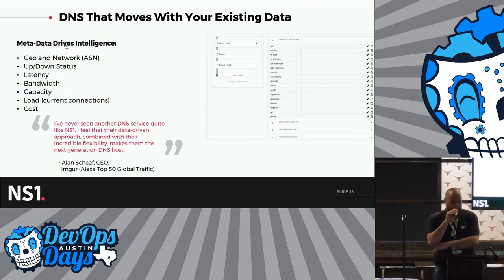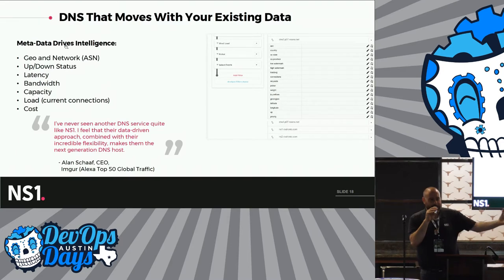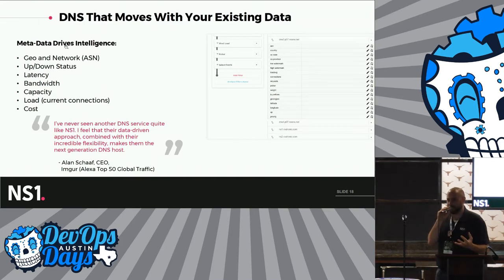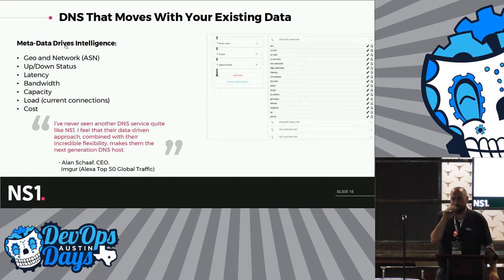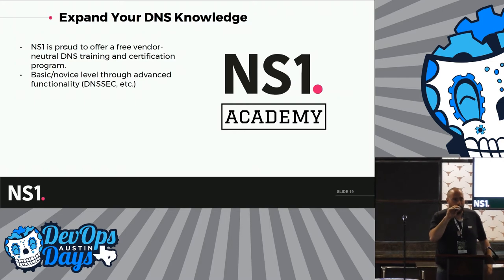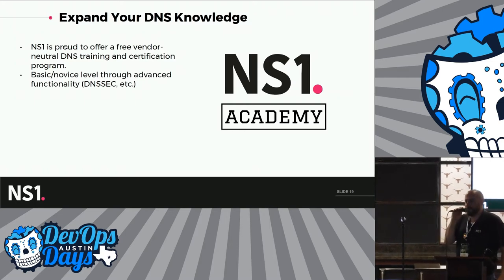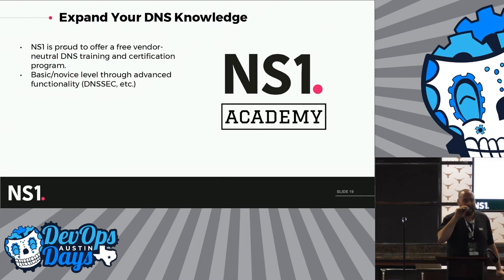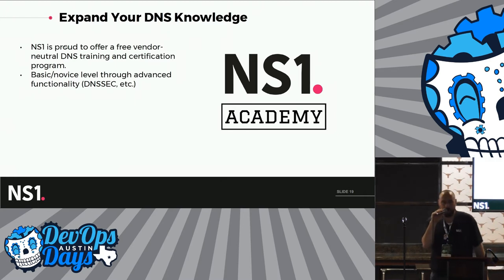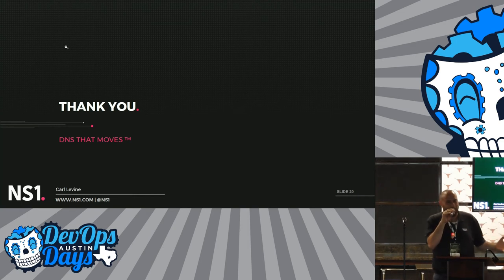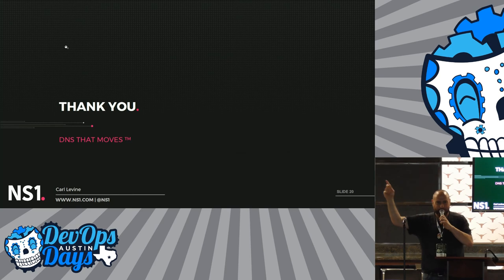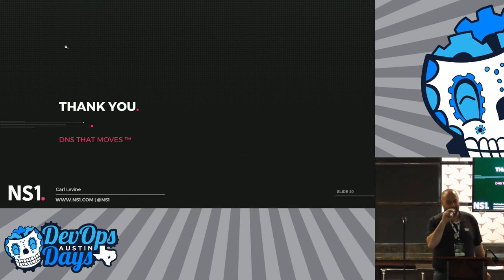Just a quick plug for us — we're up in the vendor suite at 1:30. We can take all that data in and do interesting things with it, routing based on metrics that are important to you, your business, and your customers, whether internal or external. And if you want to learn more about the domain name system, we just launched NS1 Academy on Monday, which is a vendor-neutral DNS training certification we've rolled out as a service. You can learn more about how this very important piece of the internet works. My name is Carl Levine, here with Isaac and Nate. We will be up in the suite at 1:30 — come talk DNS with us, we'd love to see you.